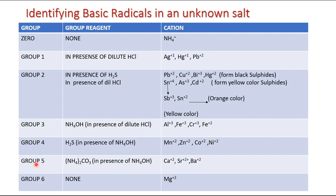In Group 5, we have ammonium carbonate as the reagent, and it again works in the presence of NH4OH. In this group we have calcium dipositive (Ca2+), strontium dipositive (Sr2+), and barium dipositive (Ba2+).